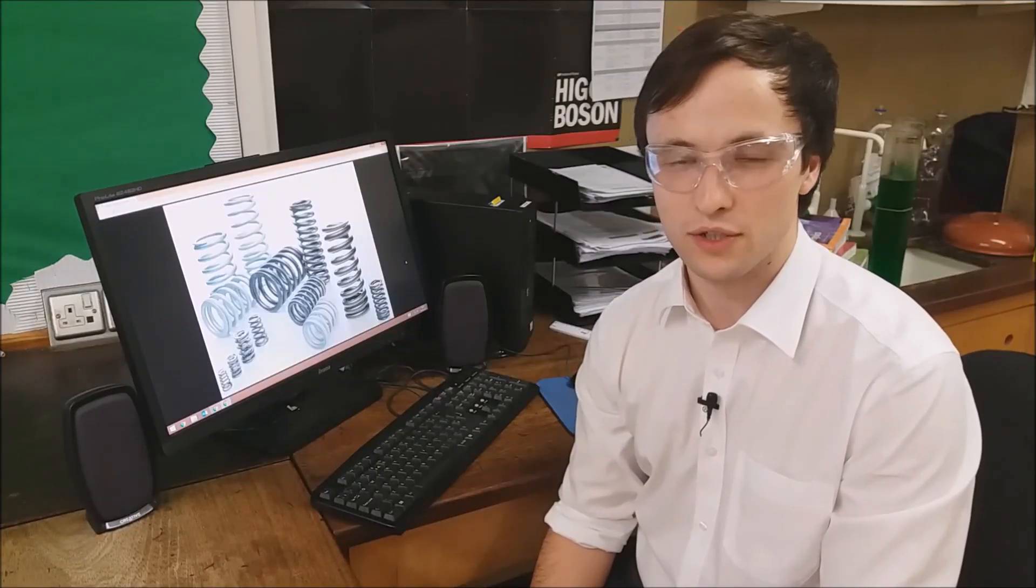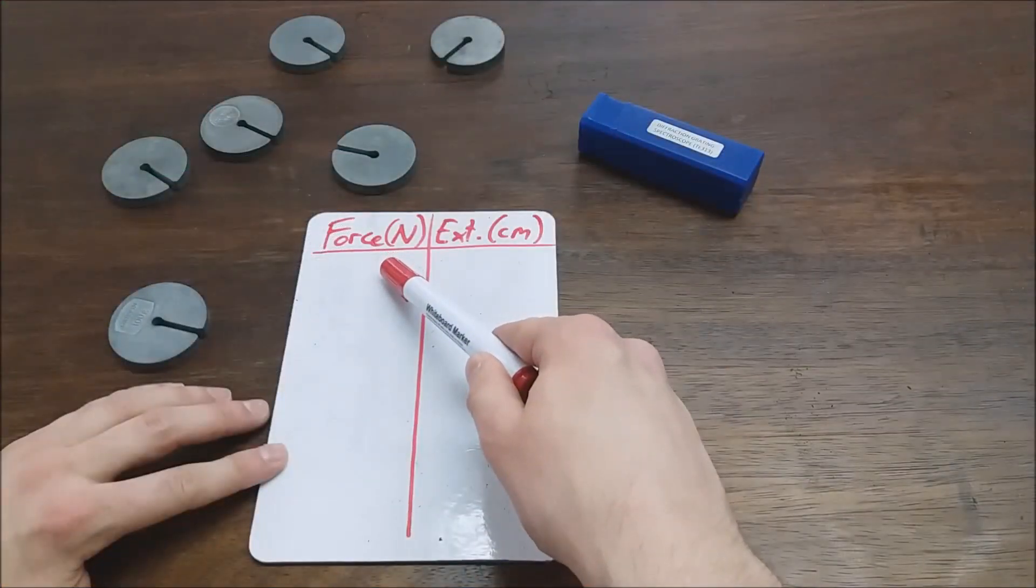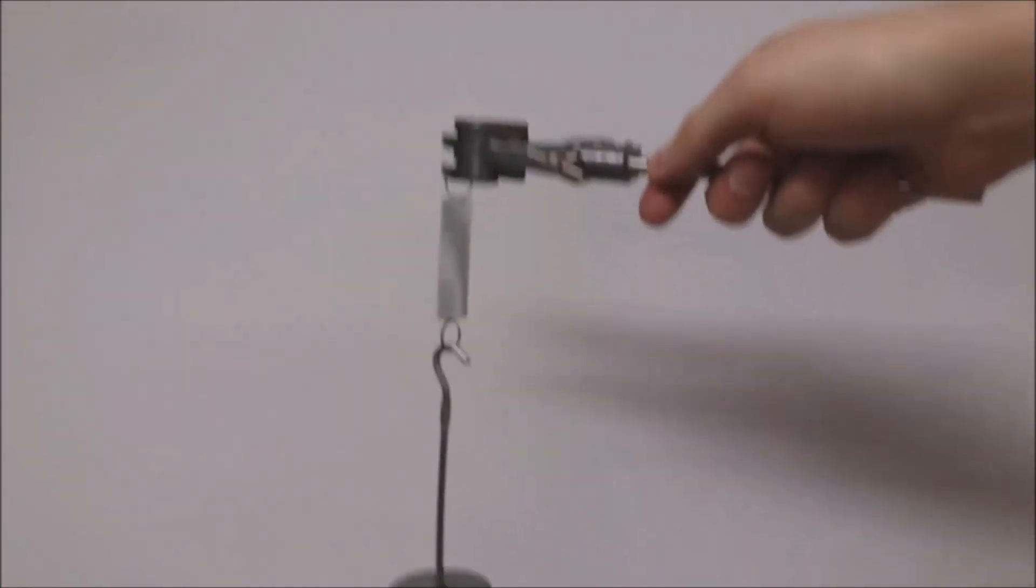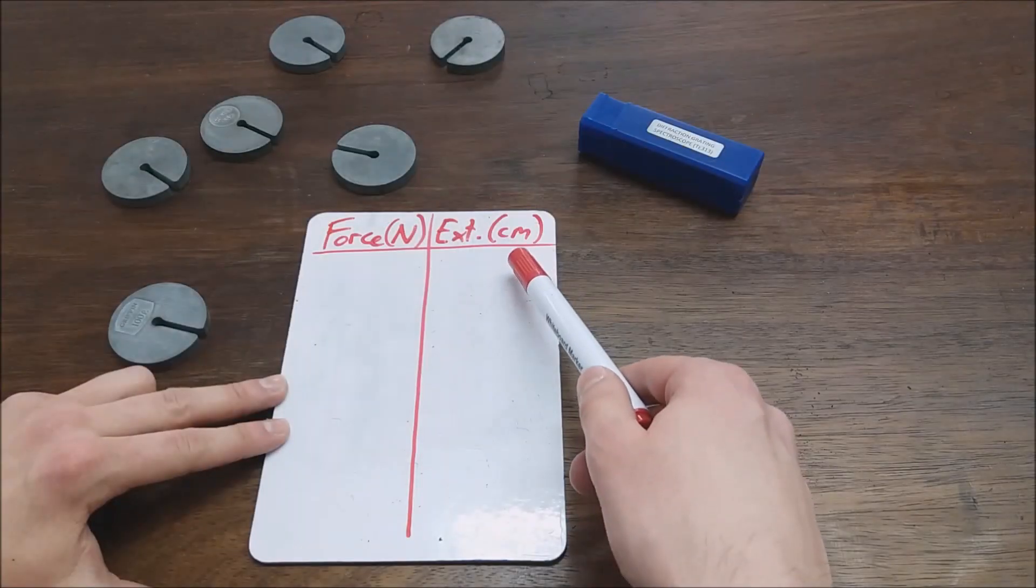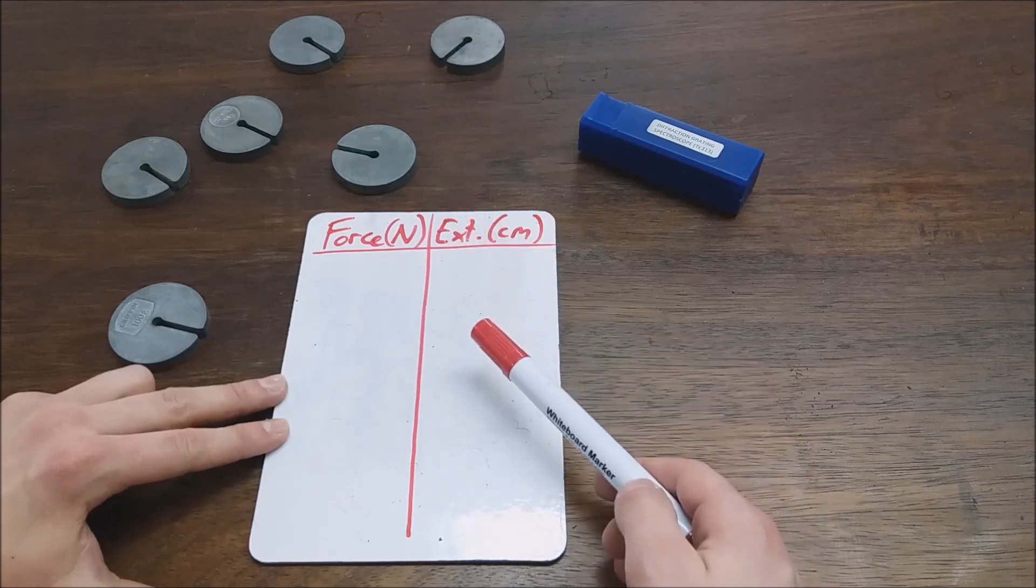In this practical, we'll be investigating the extension caused by forces on two different springs. We have one column for our independent variable, force—that's what's doing the stretching—and one column for the extension of the spring. I'll make a similar results table for the second spring afterwards.